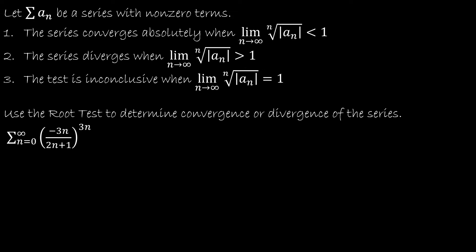So I'm going to find the limit as n approaches infinity of the nth root of the absolute value of a_n. So a_n is all of this: negative 3n over 2n plus 1, all to the 3n power.